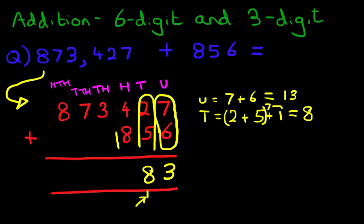We're now going to add the hundreds. For the hundreds it is 4 plus 8. No carrying. 4 plus 8 is 12. So let's write that down. Put 1 here and we put 2 here.